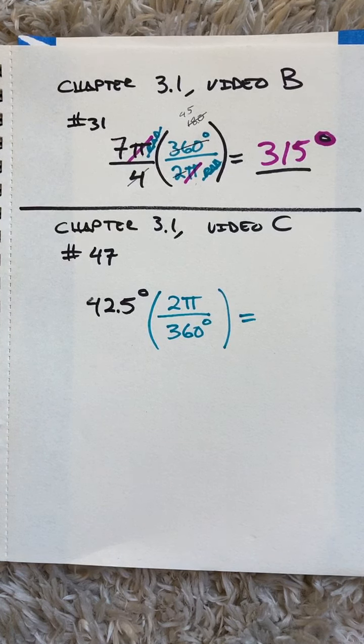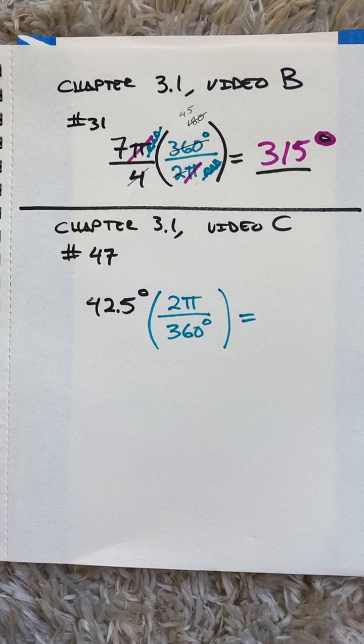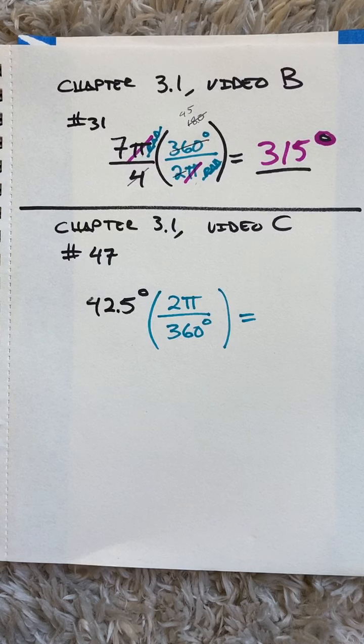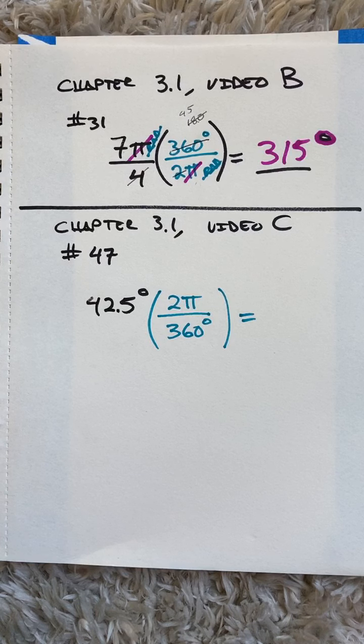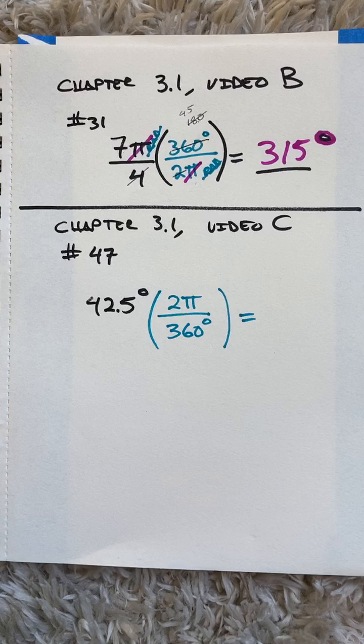I had to delete it because my dog was going crazy. Anyway, number 47 says convert each degree measure to radians and if applicable round to the nearest thousandth. This is much like number 11, really if not exactly.